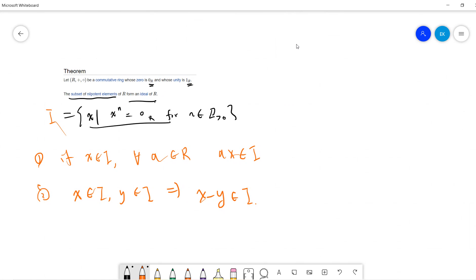This is very easy. We just check one by one. For the first one, suppose x belongs to I, so x to the power of n is zero. Given a, we can take (ax)^n, which becomes a^n times x^n, which equals a^n times zero_R, which is zero.